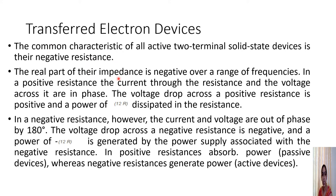What do we mean by negative resistance? The real part of the impedance will be negative over a wide range of frequency. In the case of positive resistance, the current and voltage are in phase; the voltage drop across a positive resistance is positive and power I²R is dissipated. But in the case of negative resistance, the voltage and current are out of phase by 180 degrees, the voltage drop is negative, and the power dropped is minus I²R.